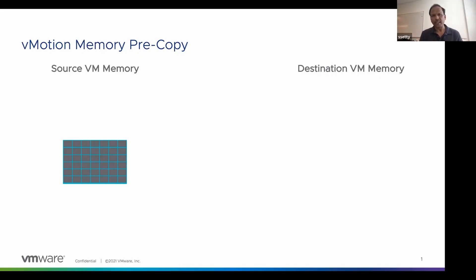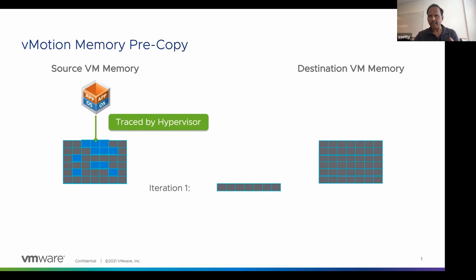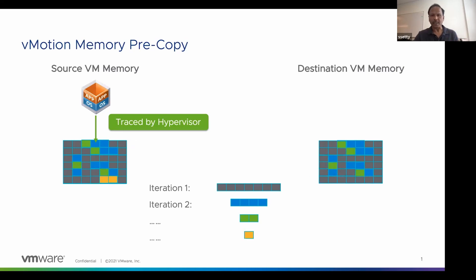Let me quickly review how vMotion actually works. vMotion works by iteratively copying the memory of a running VM from source host to destination host. Before we start the copy, we always trace guest memory pages — this enables the hypervisor to track any guest page modifications. In the first pass we transfer the entire guest memory, then we track changes and transfer only those dirty pages. This process continues until it converges, at which point we completely stop VM execution and transfer it to the destination.